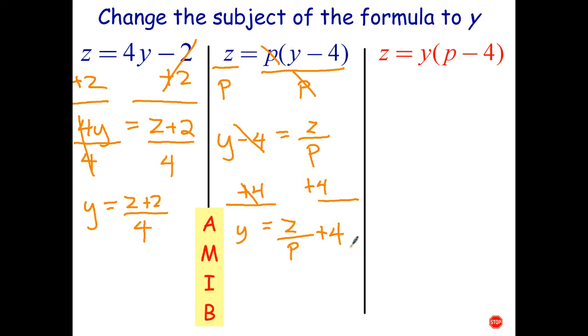Okay, and the last one. Here we have the y outside the brackets. Now, there's a couple things you could do here. You could expand first. That's one way to do it. But it turns out it's easier, in my opinion, to say, well, I can divide by all of p minus 4.